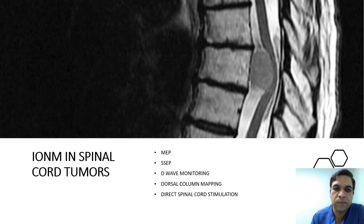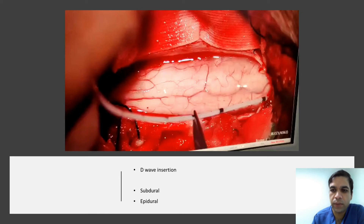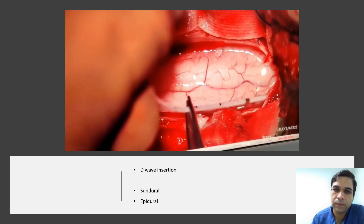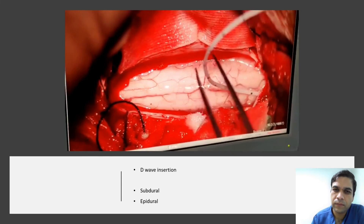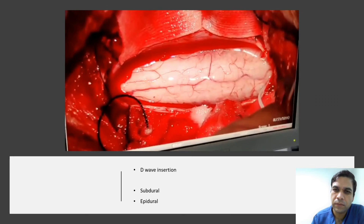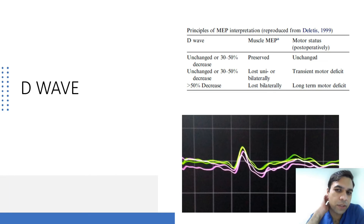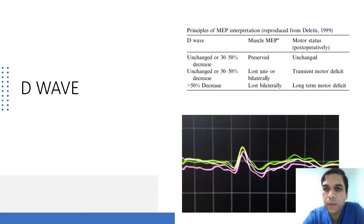For spinal cord intramedullary tumor resections, we do a different type of monitoring called D-wave monitoring, or epidural monitoring, where a catheter with electrodes is inserted into the epidural space. The D-wave is very sensitive and specific for intramedullary tumors — we use this rather than relying solely on MEPs. Even if MEP decreases, there are many instances where we continue the surgery. Only if the D-wave is decreasing do we assume the motor tracts are being affected and halt the surgery.